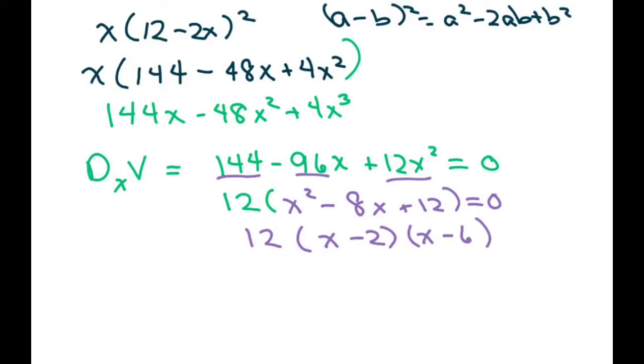So our x's are going to be x is going to be 2 or 6. We disregard x equals 6 because if you plug in 6 into this, you're going to get 0. So we have to disregard that. That's part of knowing your parameters or your boundaries. So we have x equals 2.